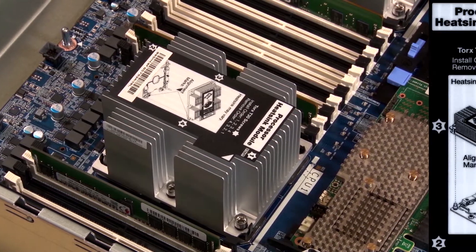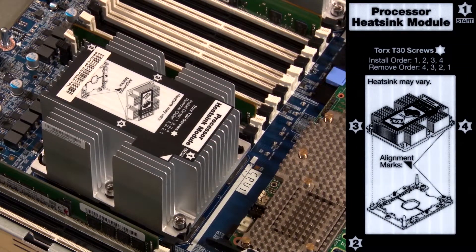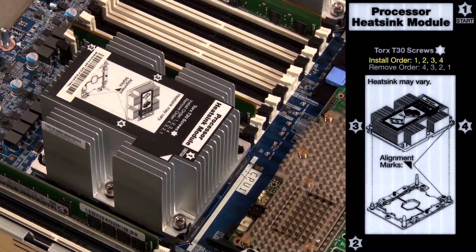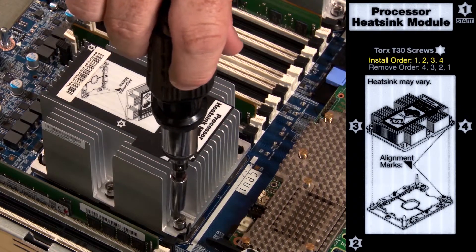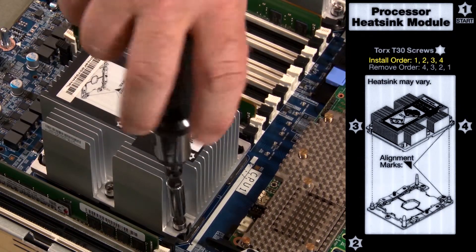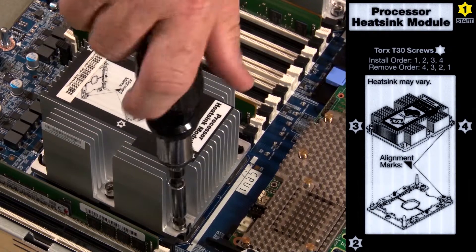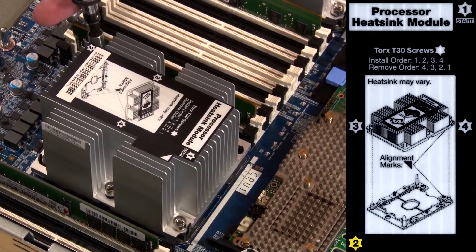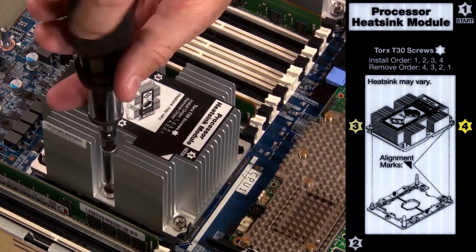Fully tighten the numbered Torx T30 captive fasteners on the processor heat sink module in the install sequence shown on the heat sink label. This label instructs us to begin tightening fastener number one, then two, three, and four.